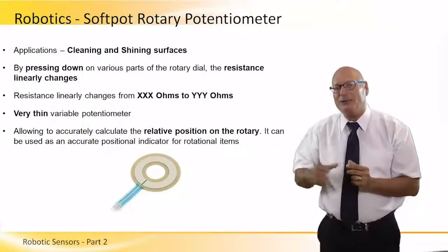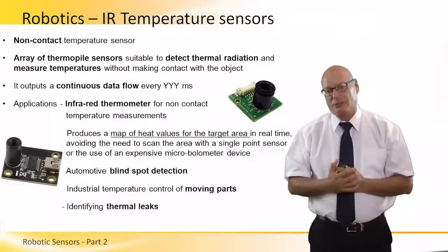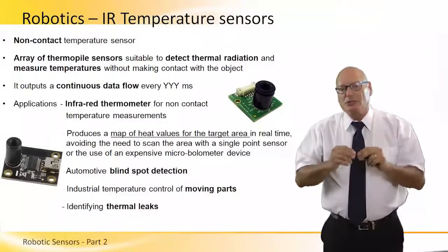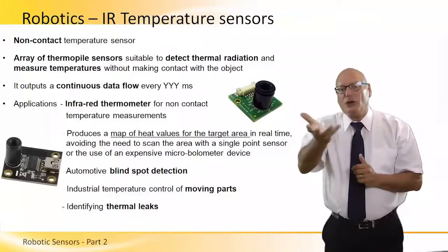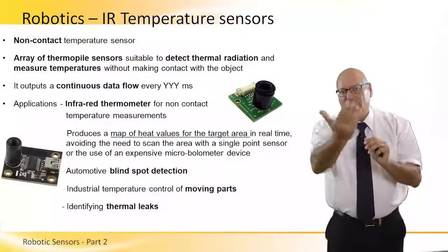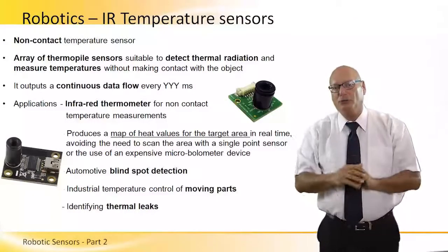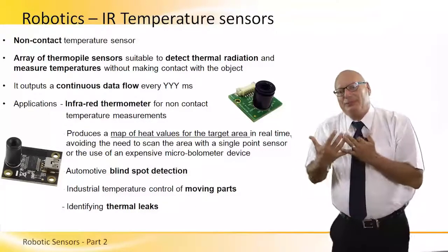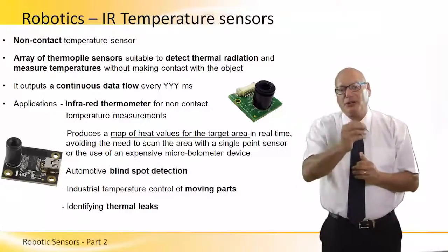This is very important for cleaning of lenses in the optics industry. Infrared temperature sensors — a non-contact temperature sensor. It's an array of thermopile sensors suitable to detect thermal radiation and measure temperatures. It can be an array, meaning we can have a temperature map of the object being tested, knowing exactly where there is a leak or whether the temperature being dissipated from an object is dissipated homogeneously. This is extremely important, and even enables automatic blind spot detection.